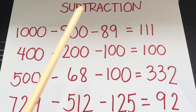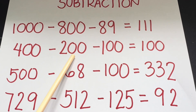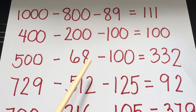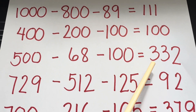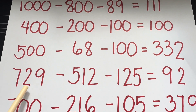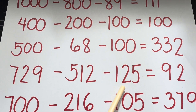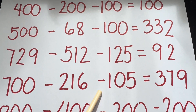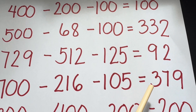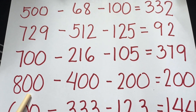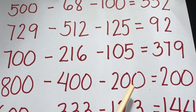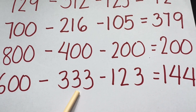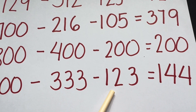Subtraction summary: 1000 minus 800 minus 89 equals 111. 400 minus 200 minus 100 equals 100. 500 minus 68 minus 100 equals 332. 729 minus 512 minus 125 equals 92. 700 minus 216 minus 105 equals 379. 800 minus 400 minus 200 equals 200. And lastly, 600 minus 333 minus 123 is equals to 144.